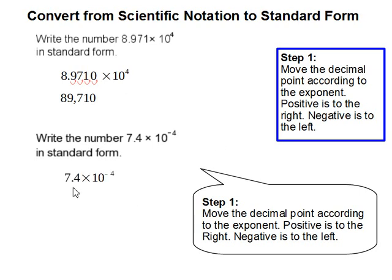Then for this problem we have 7.4 times 10 to the negative 4th power. And 4 is a negative number so we move the decimal point to the left 4 times. And the spaces without numbers we simply replace them with zeros. And our resulting answer is 0.00074.